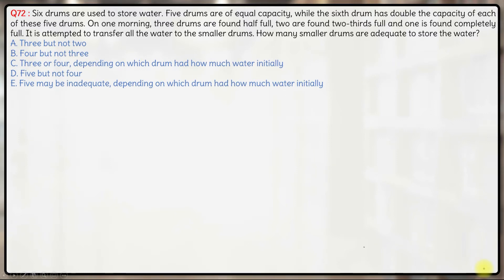In this question, we have 6 drums used to store water. Five drums are of equal capacity, while the 6th drum has double the capacity of each of these 5 drums. So we have 5 drums of capacity A and there is a 6th drum of capacity 2A.